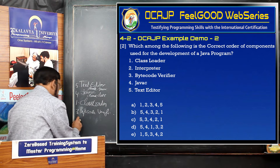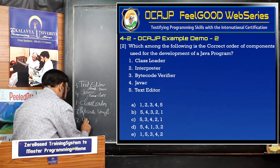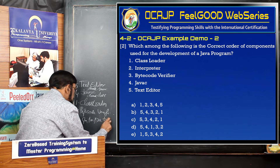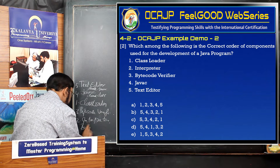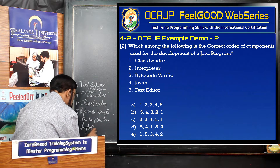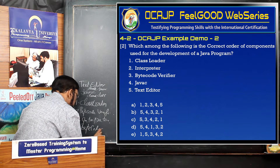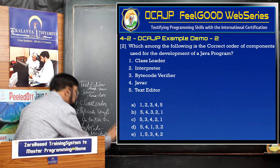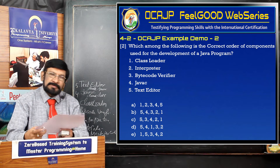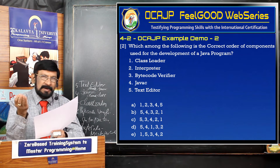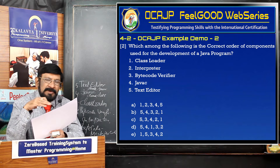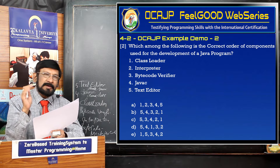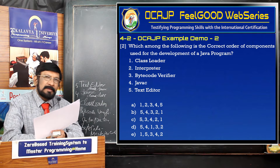Thereafter, the final stage is the interpreter. The interpreter interprets the bytecode into machine code. Machine code is the language of the processor, then the processor can understand it - it is totally in binary. The processor can understand and execute it, and as a result of that, whatever results you are expecting, you get.